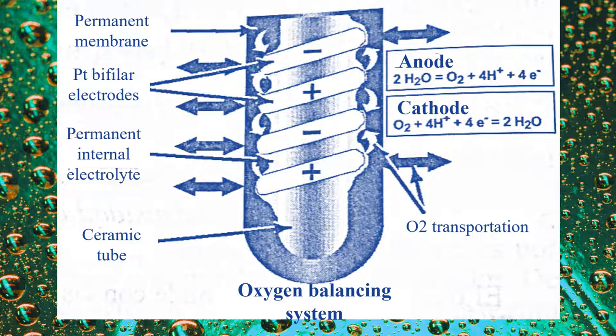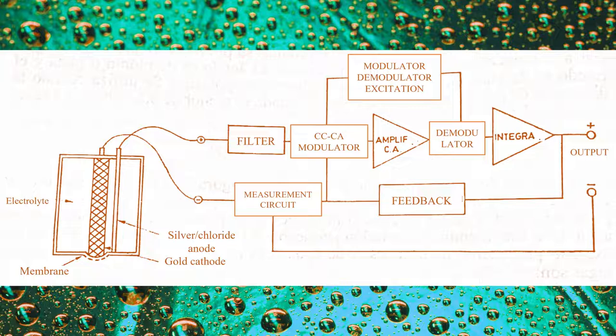The reactions are the ones you can see on the screen. Diffusion continues until the partial pressure of oxygen is equalized on both sides of the membrane. The current required to maintain this equilibrium indicates the concentration of oxygen in the solution.